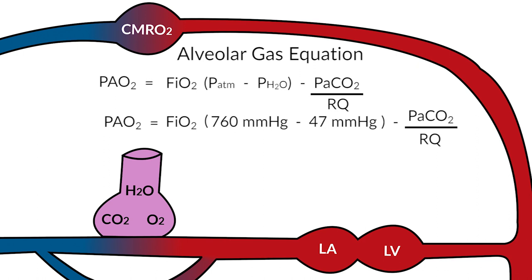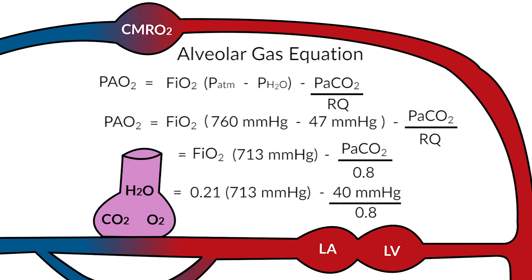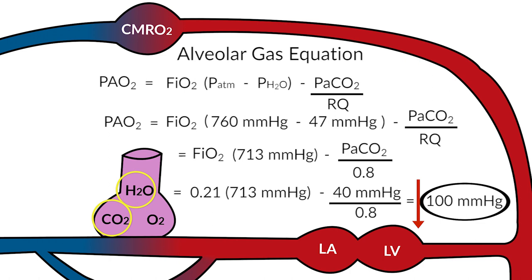What the alveolar gas equation simplifies to is your FiO2 multiplied by 713, where you subtract out the partial pressure of carbon dioxide. The typical respiratory quotient for most people under normal circumstances is approximately 0.8. And from there, the partial pressure of oxygen in the alveolus is somewhere in the neighborhood of 100 millimeters of mercury. So you'll notice that the first step in the oxygen cascade where we lose partial pressure of oxygen is because of the gases that occupy the alveolus.